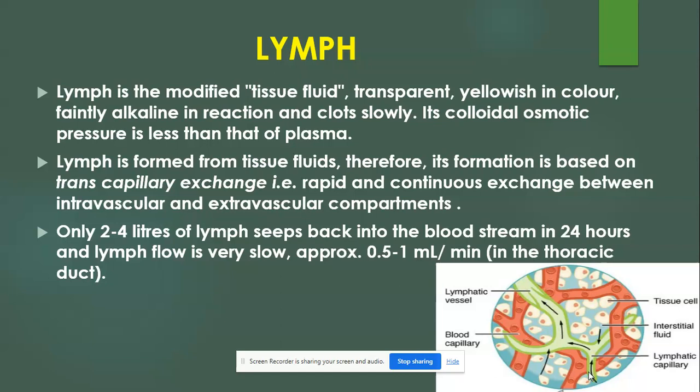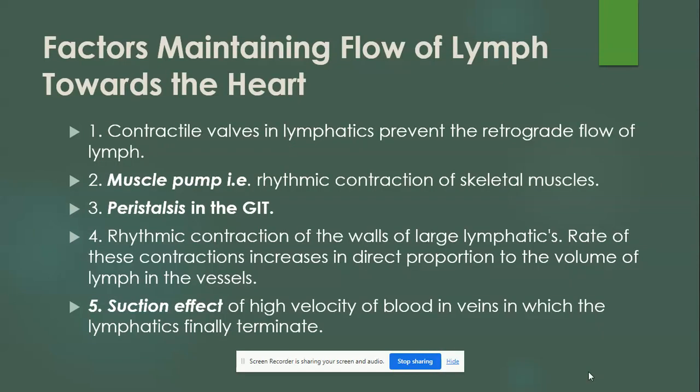To summarize, lymph is a modified tissue fluid that is transparent, yellowish in color, faintly alkaline in reaction, and clots slowly. Next, we will look at the factors maintaining the flow of lymph towards the heart.